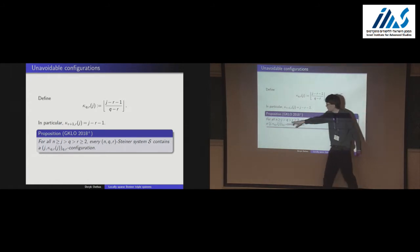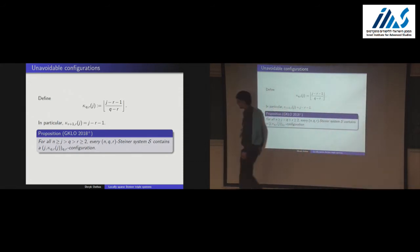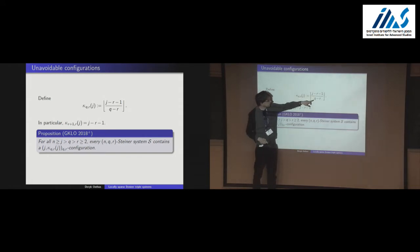We define a function κ(Q,R,J) that generalizes the Steiner triple system case, and a proposition says that any Steiner system contains a J,κ configuration. For Steiner triple systems, κ(3,2) gives a J,J−3 configuration. The proof follows the same inductive argument: in any existing configuration there's an uncovered R-set, and adding the Q-set covering it grows the configuration by Q−R points and one Q-set — exactly what κ tracks.